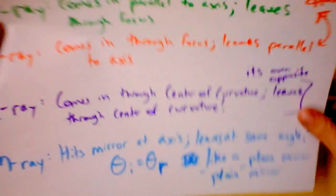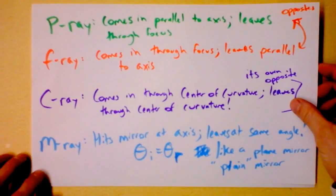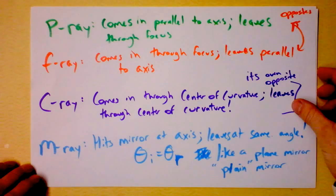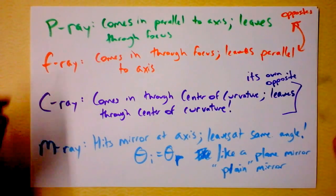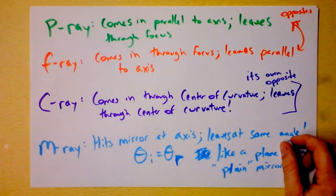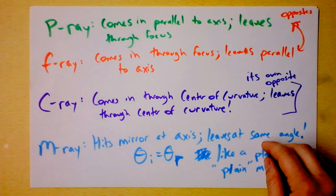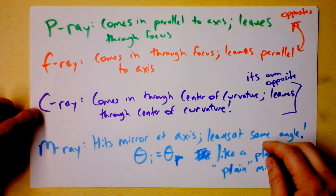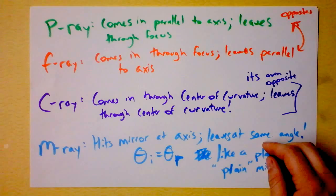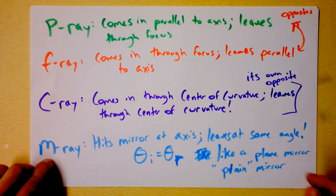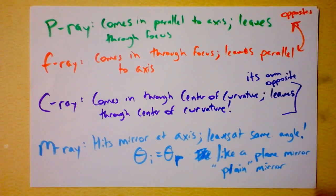All right, here are the ground rules. One, these are the four rays that we're going to be addressing: the P ray, the F ray, the C ray, and the M ray.